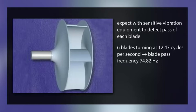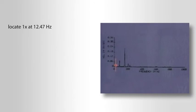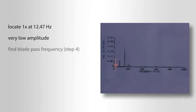The calculated blade pass frequency is 74.82 hertz. Here we see a vibration spectrum taken with no water flowing to the fan — step three. When we locate the one-times at 12.47 hertz, we find a very low amplitude.